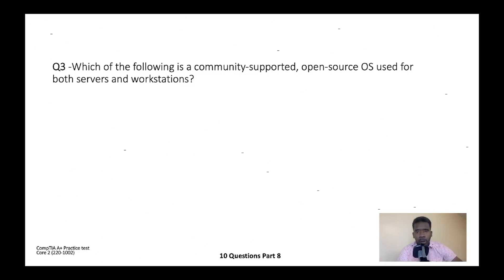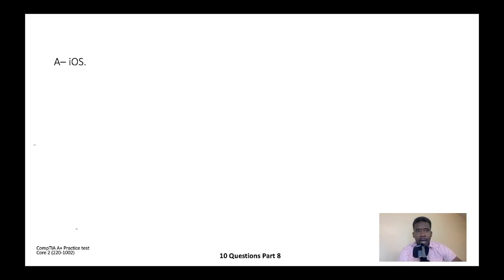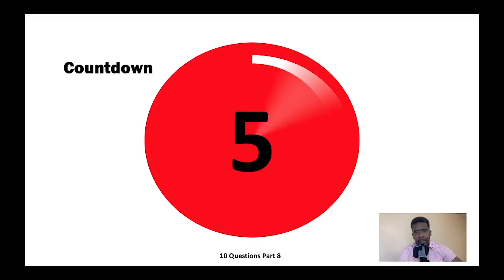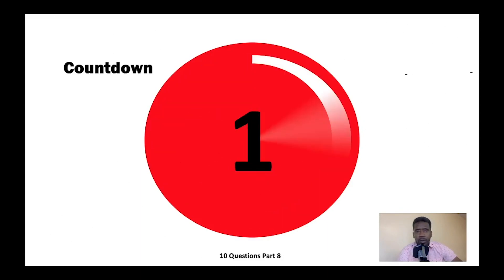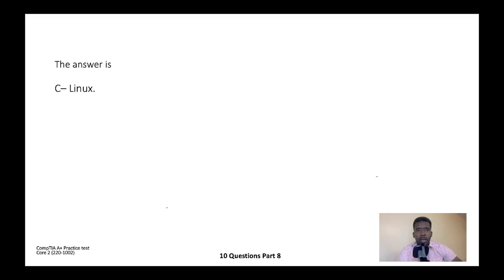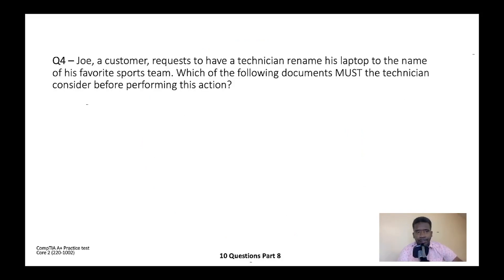Question three: Which of the following is a community-supported open source operating system used for both servers and workstations? Is it A) iOS, B) Windows 10, C) Linux, or D) OS X? You know Windows is not open source, so the correct answer is C — Linux.